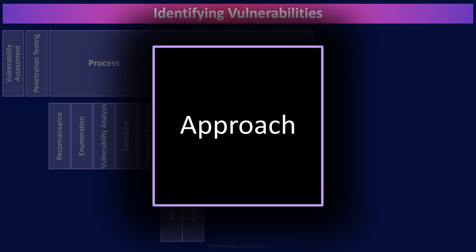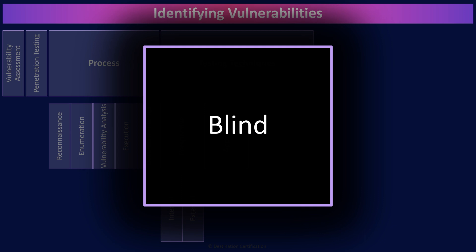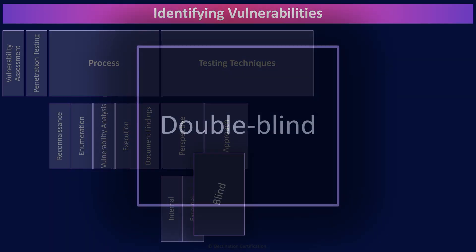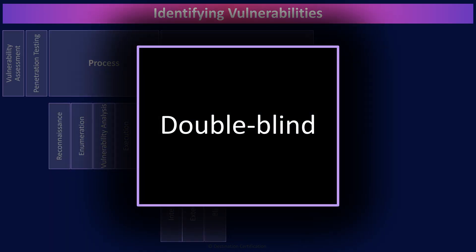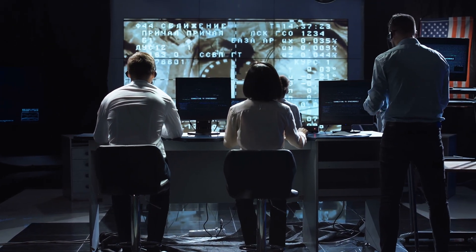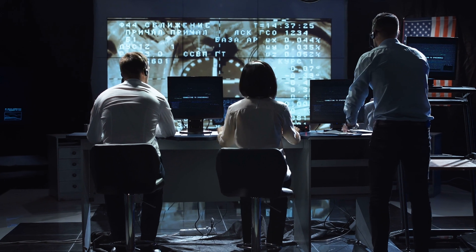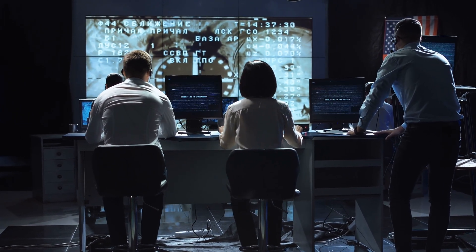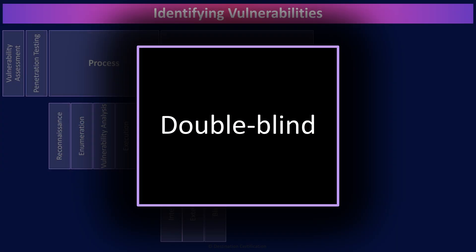There are a couple of major approaches that can be used in conducting these tests. In a blind test, we give the ethical hacker very little information on the system to be tested — perhaps just an IP address. The ethical hacker is blind. Double blind means not only do we not give the assessor any information, we also don't tell the organization's security operations team that the hack is occurring. Double blind tests not only what the assessor can get into, but also how effectively the organization can detect and respond to the attack.